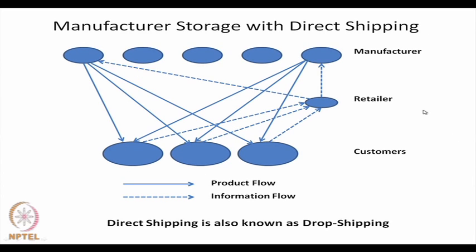The second option is where the manufacturer has the main storage. The retailer's work is only to pass on information to the manufacturers. Customers place their order with the retailer because the retailer is close to them; the retailer informs the manufacturer of the requirement, and the manufacturer directly makes the supply to the customer. This direct shipping is also known as drop shipping.